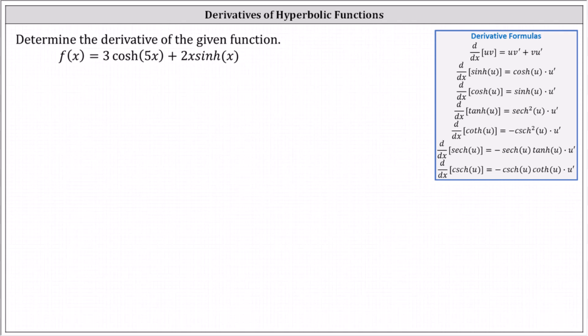Determine the derivative of the given function. We have f of x equals three hyperbolic cosine of five x, plus two x times hyperbolic sine x. Notice to differentiate three hyperbolic cosine five x, we need to apply the chain rule where the inner function is five x, and to differentiate two x times hyperbolic sine x, we need to apply the product rule of differentiation.